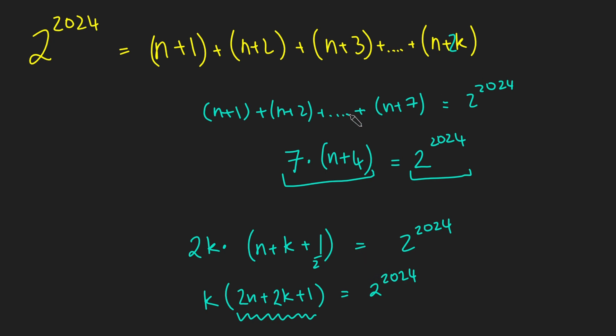And that proves that it's impossible to write 2 to the 2024 as the sum of consecutive integers.